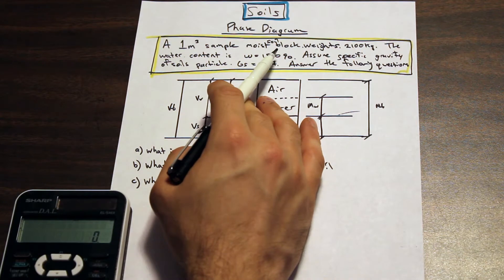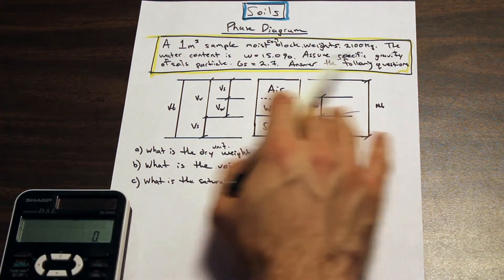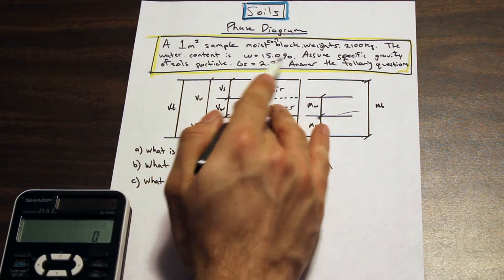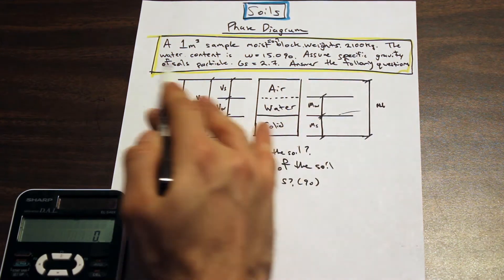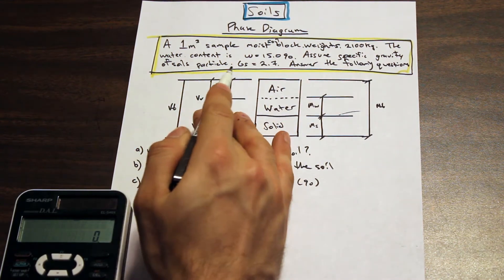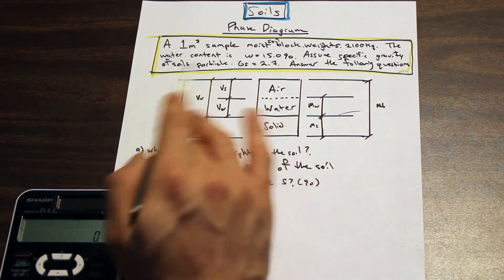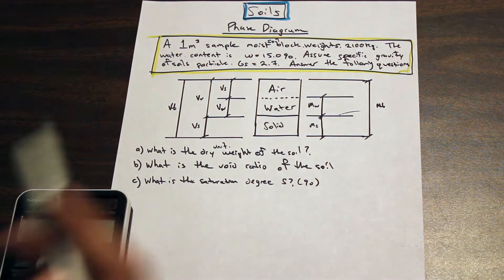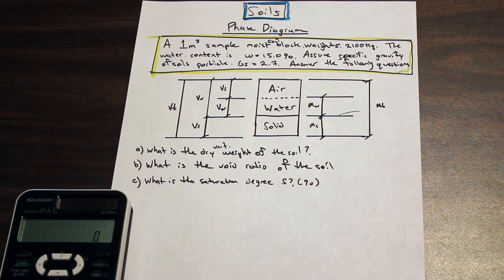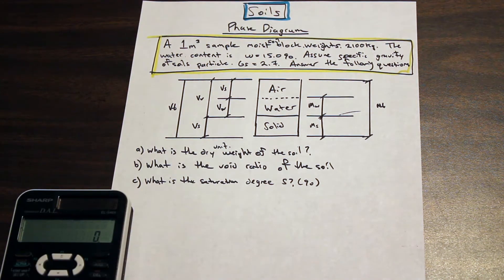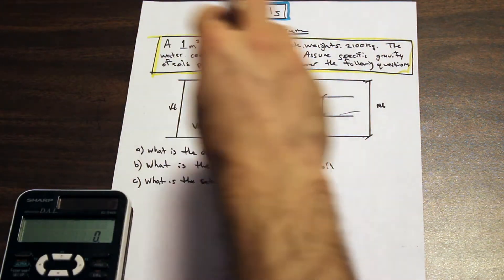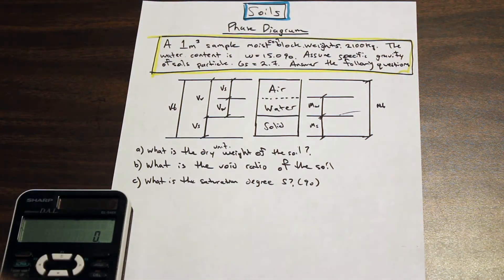We have a one-meter-cubed sample of moist soil and it weighs 2100 kilograms. The water content is 15 percent. Assume the specific gravity of the soil particles to be 2.7. The questions are: what is the dry unit weight of the soil, what is the void ratio of the soil, what is the degree of saturation of the soil, and we're also going to label the phase diagram.